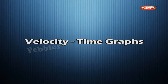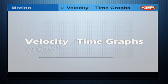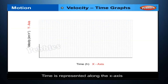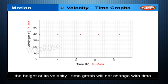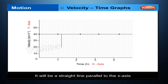Velocity-Time Graphs. In this graph, time is represented along the x-axis and the velocity is represented along the y-axis. If the object moves at uniform velocity, the height of its velocity-time graph will not change with time — it will be a straight line parallel to the x-axis.